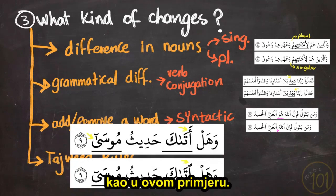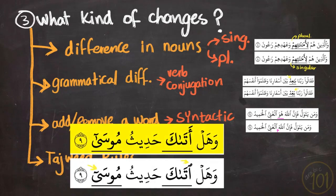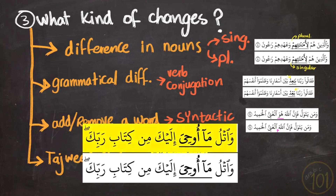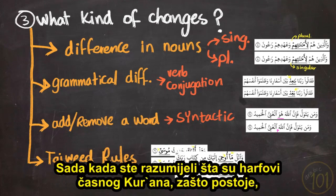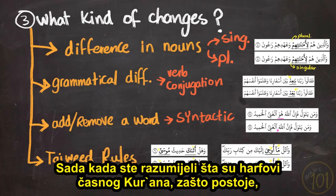The last type of variation is some differences in the application of the tajweed rules, such as in the example: 'wa tilawa ma yutla alaykum min al-kitab.' Now that you understand what a harf is in the Holy Quran, why it exists, and what kind of variations are linked to each harf, let's find out what are qiraat.